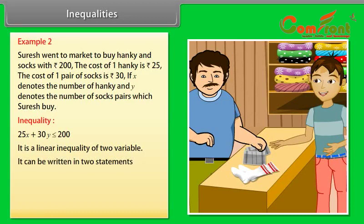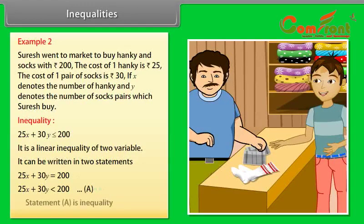It can be written in two statements: 25x plus 30y is equal to 200, and 25x plus 30y less than 200. Name it as A. Statement A is an equality in this case.